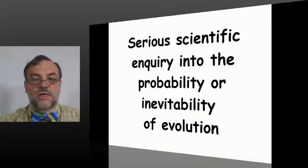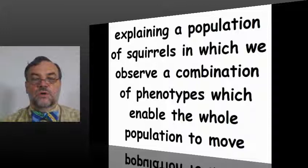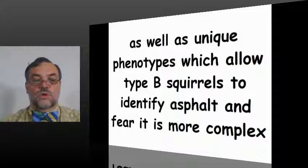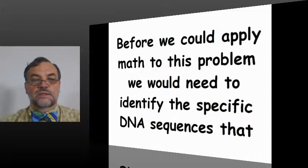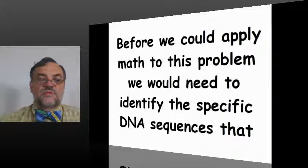Serious scientific inquiry into the probability or inevitability of evolution, explaining a population of squirrels in which we observe a combination of phenotypes which enable the whole population to move, as well as unique phenotypes which allow Type B squirrels to identify asphalt and fear it is more complex. Before we could apply math to this problem, we would need to identify the specific DNA sequences.